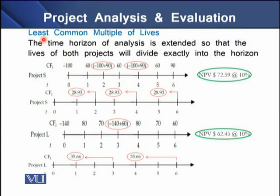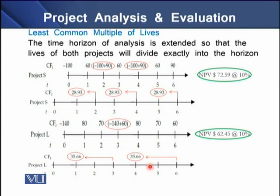On the screen you see the application of the first approach — the least common multiple of lives. In this approach, we extend the time horizon of our analysis so that the lives of both the competing projects divide exactly into the selected time horizon. Project S has a life of two years with a replacement after two years, and Project L has a life of three years with a replacement after three years. Taking the least common multiple of two and three, we arrive at a figure of six. This means we need to extend our analysis to a period of six years, giving us three replacements for Project S and two replacements for Project L.